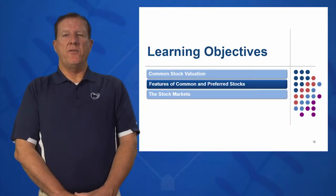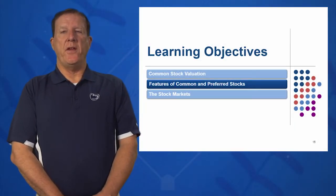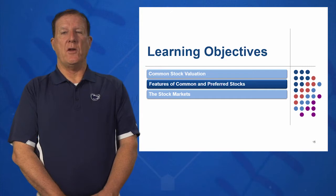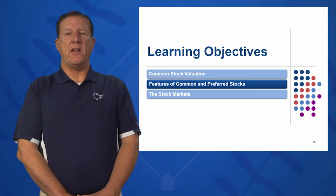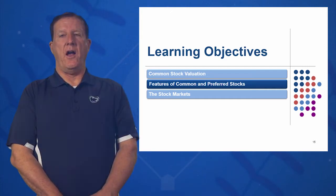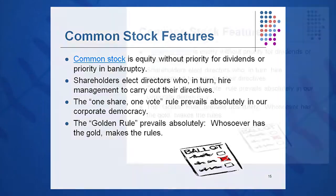In Learning Objective 2, we're going to look at some features of common and preferred stock. What exactly is a common stock and how is it different than a preferred stock? Common stock is equity without any priority over dividends or any priority in bankruptcy. You're just a common stockholder.